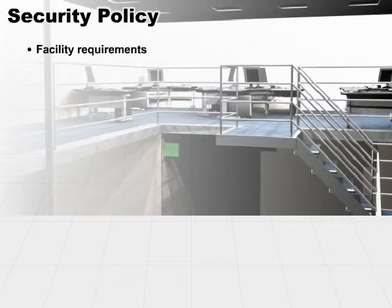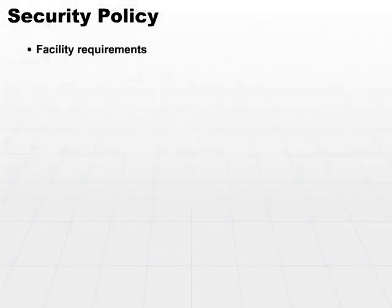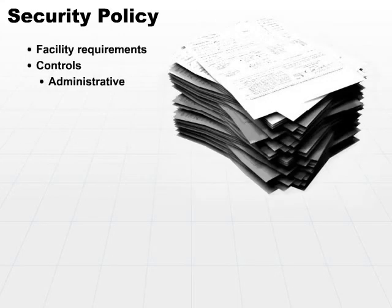Then, once you understand your facility requirements, you start looking at the specific controls that you need to implement. Controls will be broken out into several different categories. You have administrative controls. Those are the controls which you handle up front — planning type of controls that dictate policies and procedures and tell you how to do things in a secure manner.